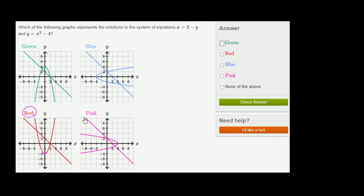But we can verify that this line right over here is x = 2 - y. If I were to write this in traditional slope-intercept form, I could rewrite this as: add y to both sides, we have y + x = 2, or y = -x + 2.